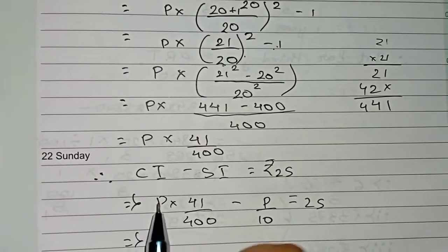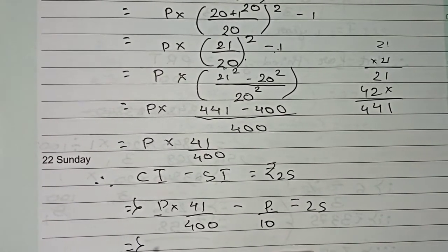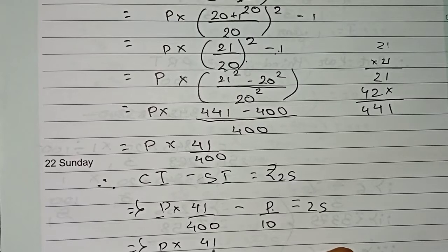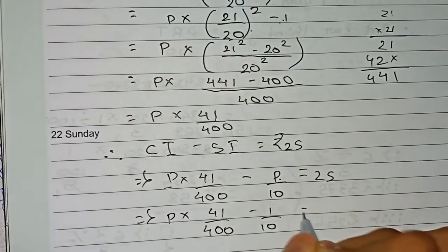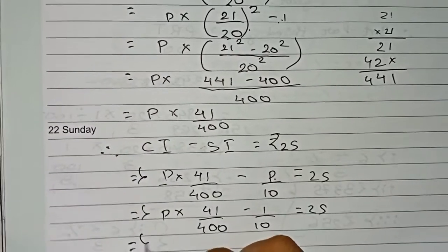So here also we take this P as the common, so this P will become minus 1. So P into 41 by 400 minus 1 by 10 is equal to 25.